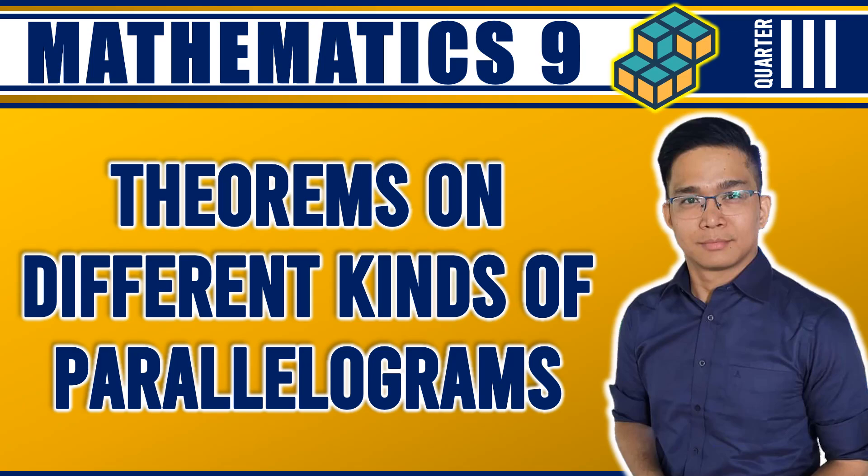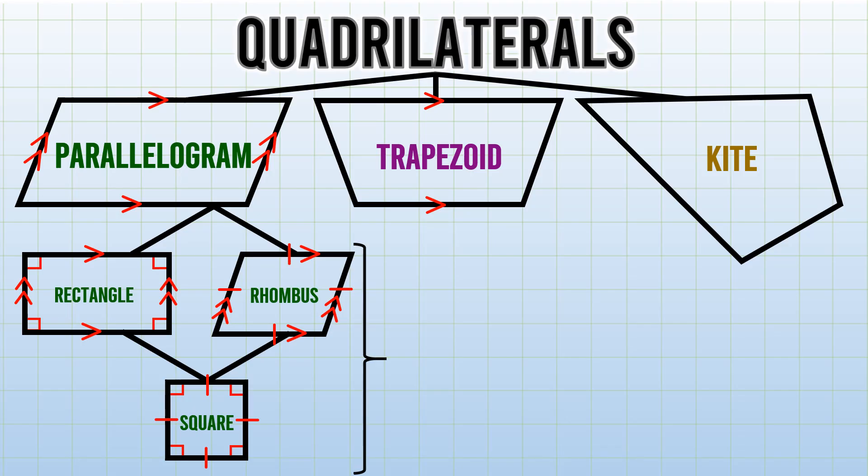Welcome to our video tutorial on how to use the theorems or properties of the different kinds of parallelograms. First, let's recall that there are three special parallelograms: rectangle, rhombus, and square. Again, only these three are special parallelograms. Let's begin.